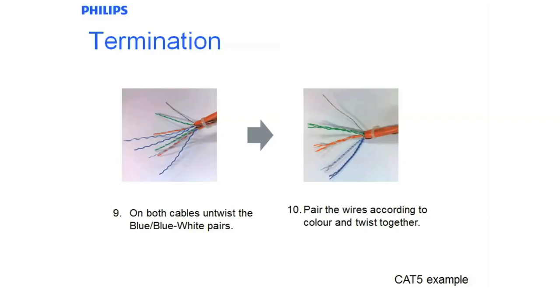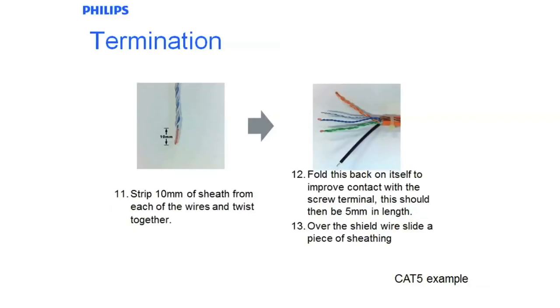Pair the wires accordingly together. Separate the blue and blue-white pair. Now wrap the blue-whites together and wrap the blues together. They will become our D-plus and D-minus terminations. Strip 10mm off the outer sheath of each of the individual conductors. Wrap them together and fold them back on themselves.